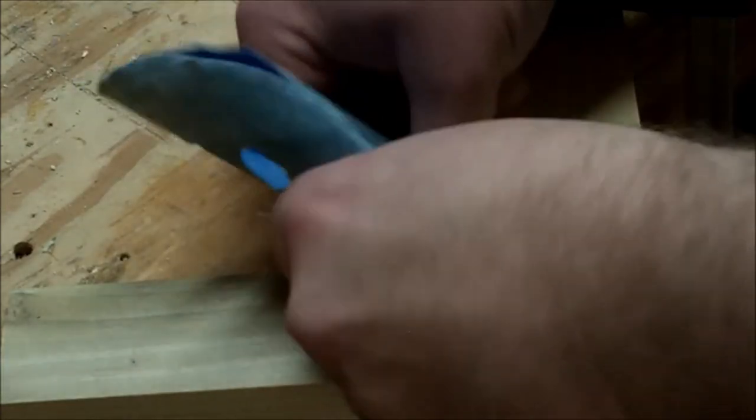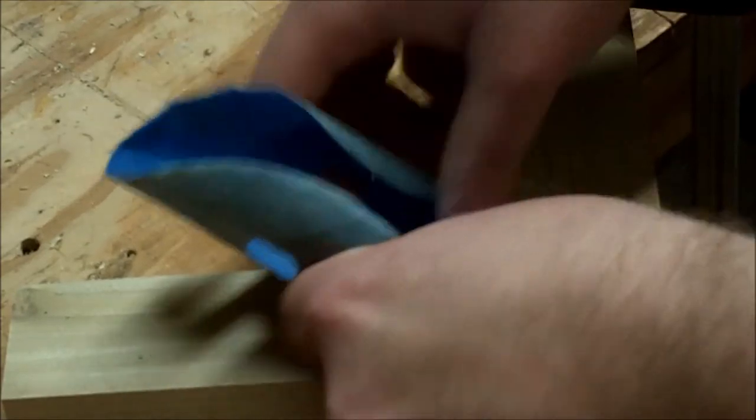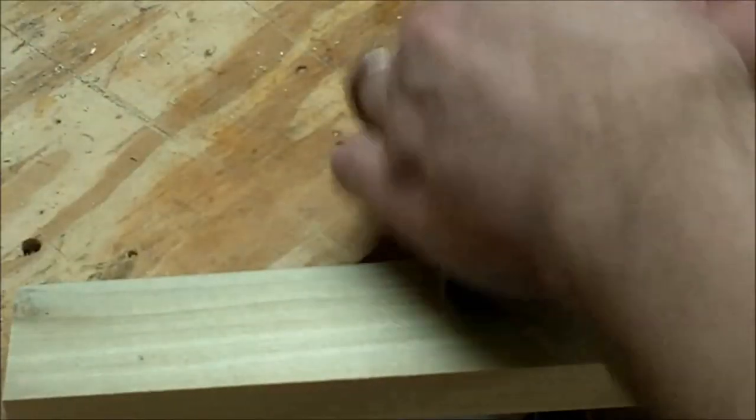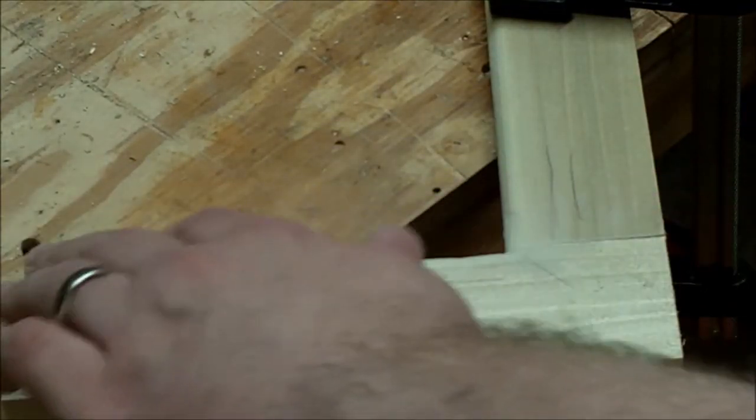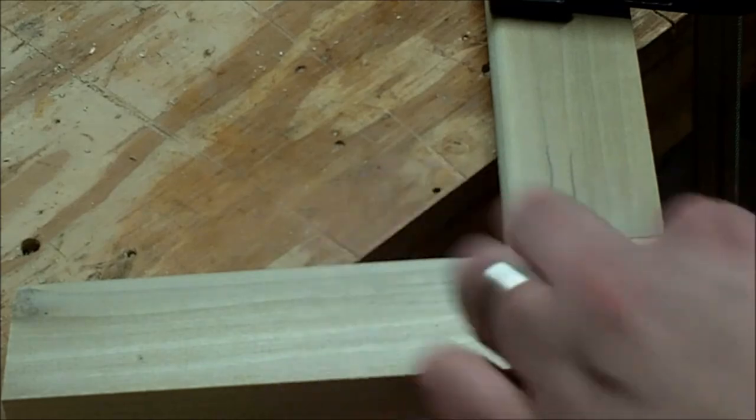And come back with some 220 grit. I usually just go ahead with the 220 and sand down all the roundover to make it a good smooth cut from what the router left over.